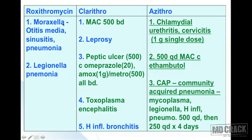Specific uses of newer macrolides: roxithromycin is used for Moraxella-related otitis media, sinusitis, pneumonia, and legionella pneumonia. Clarithromycin is very useful for treating Mycobacterium avium complex (MAC) at 500 mg twice daily, and for leprosy. It is also part of triple therapy for H. pylori peptic ulcer — clarithromycin 500 mg twice daily with omeprazole 20 mg twice daily plus amoxicillin 1 g or metronidazole 500 mg twice daily.